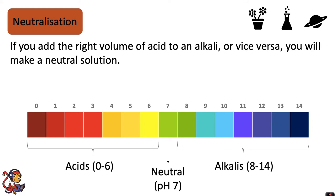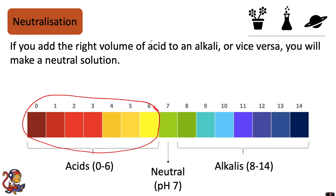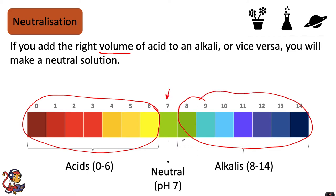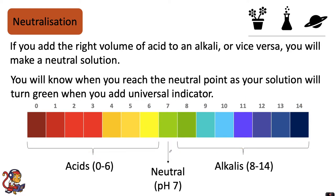If you add the right volume of acid to an alkali, or vice versa, you will make a neutral solution. So if you had something from the left hand side of the pH scale and reacted it in the right volume with something from the right hand side — an alkali — you would eventually make a neutral substance in the middle, which is pH 7. You will know when you reach the neutral point as your solution will turn green when you add a universal indicator.